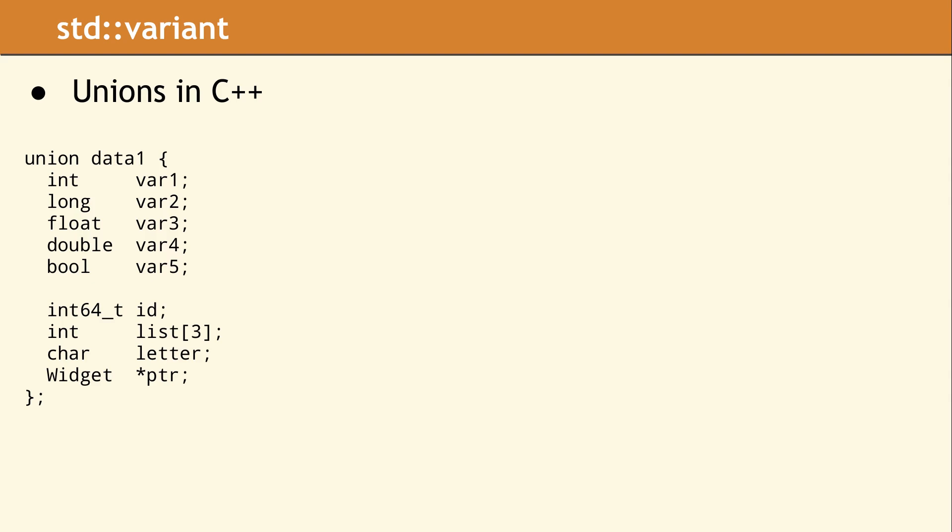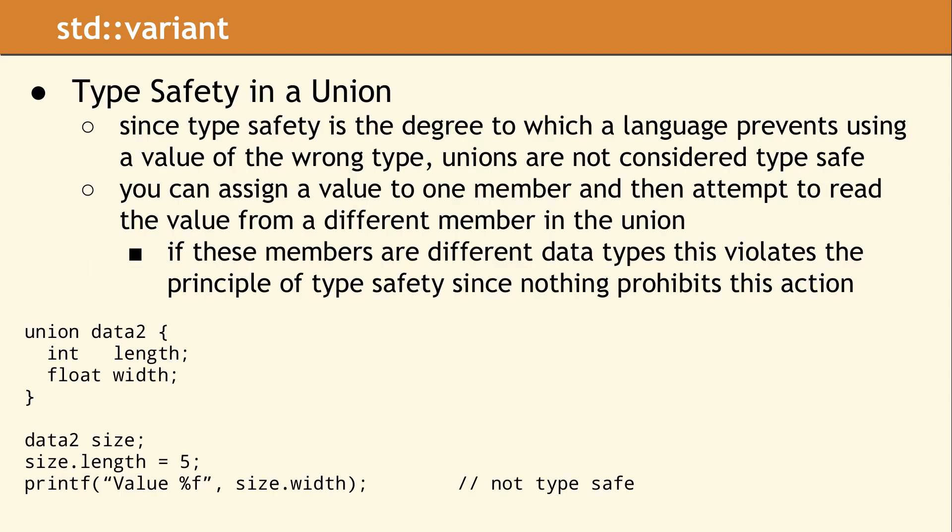When using a union, always read from the exact same data member which was last written to. Type safety is the degree to which a computer language keeps you from using a value of one data type where another data type was expected. Since the union does not know which member is currently valid, there is no way for it to prevent a type safety error. Because of this limitation, unions are simply not type safe. Code which writes to one member and then reads from another will compile and may even appear to work. However, this code is always undefined behavior in C++ and must be avoided.